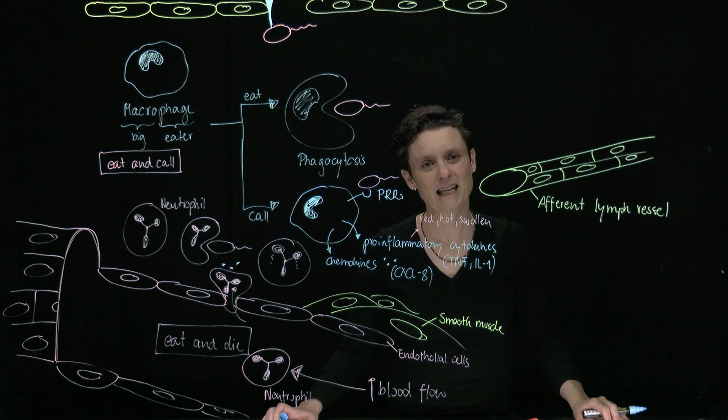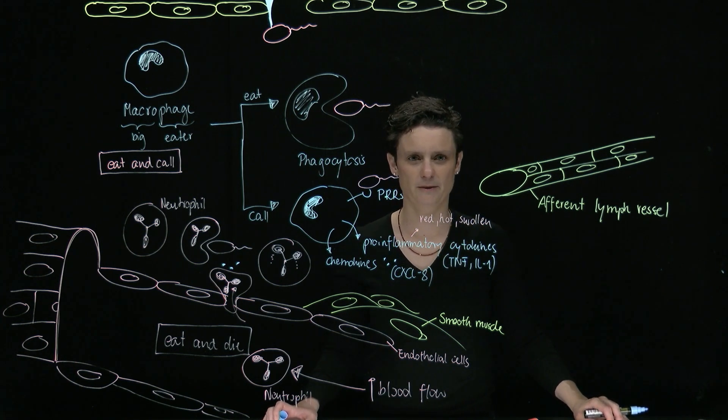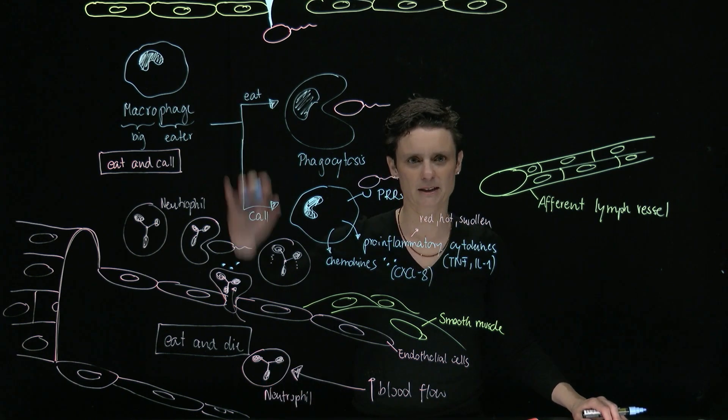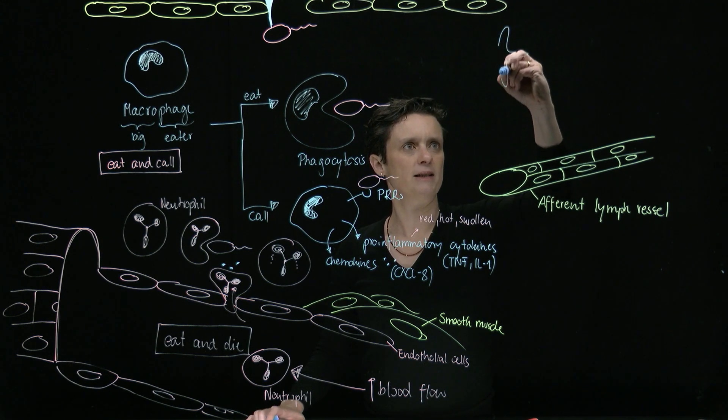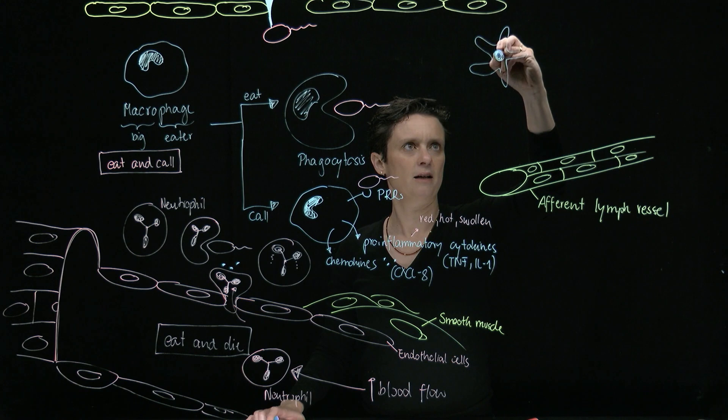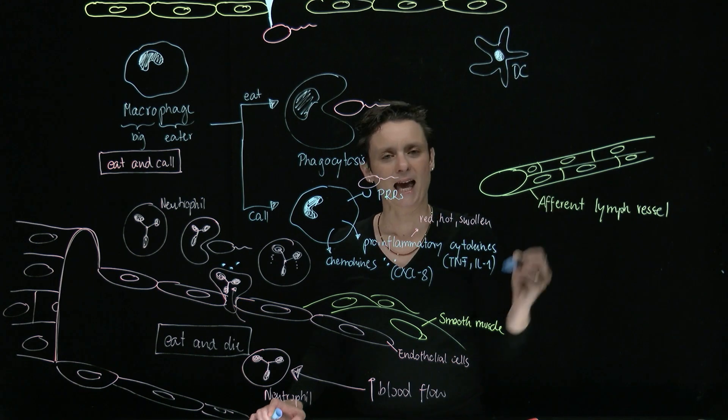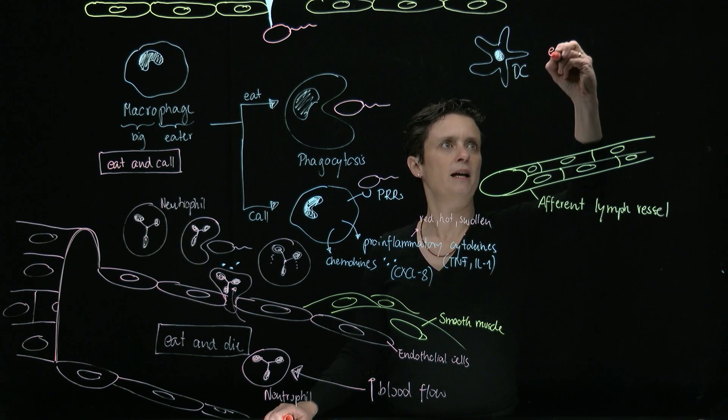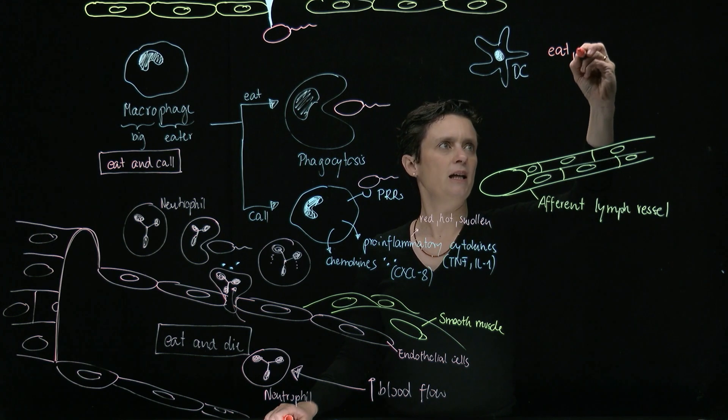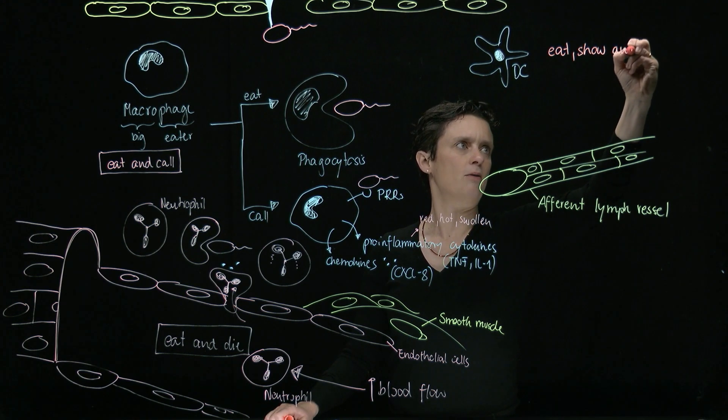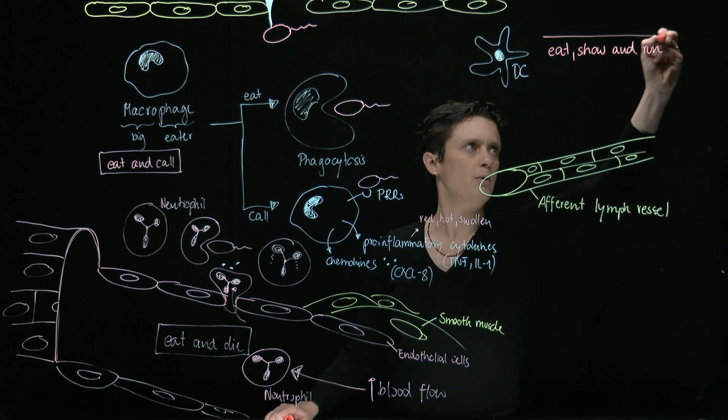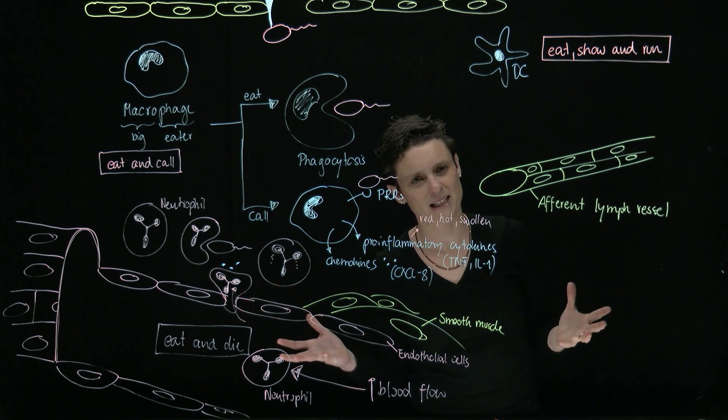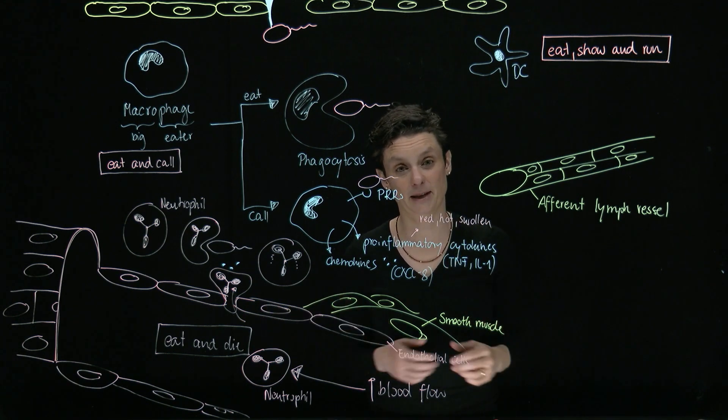So what else is happening in an innate immune response upon bacterial infection? I said in the beginning, there are two guards stationed throughout our tissue. Number one guard is a macrophage. Number two guard is the dendritic cell. Here's the dendritic cell, often abbreviated with DC. The dendritic cell is also a phagocytic cell. So it can also eat up stuff. We're going to give it the slogan: eat, show, and run.